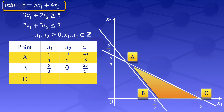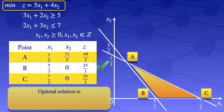At point C, x1 equals 7 over 2 and x2 equals 0. Substituting into the objective function gives z equals 35 over 2. Since this is a minimization problem, we look for the smallest value of z in the column. The smallest value is 25 over 3. So the optimal solution to the linear programming problem is z equals 25 over 3, which occurs when x1 equals 5 over 3 and x2 equals 0.